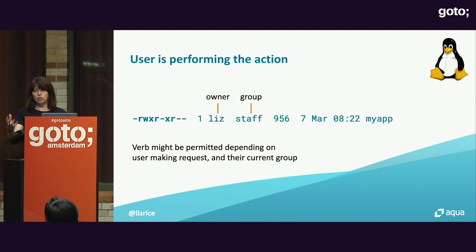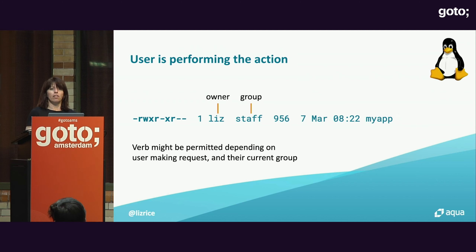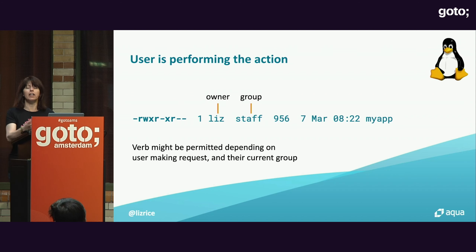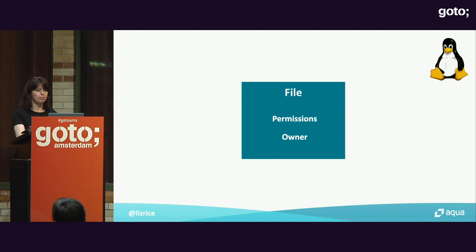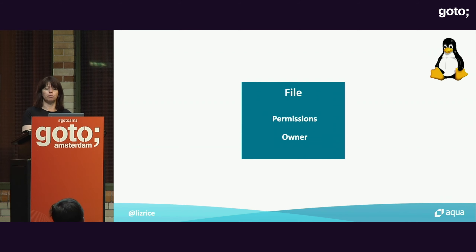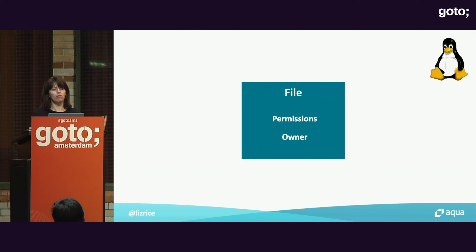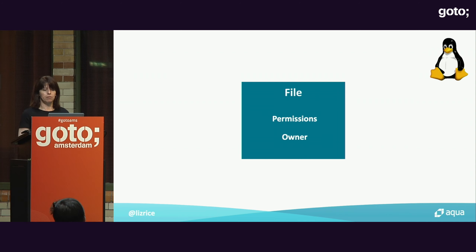To note here: there's a user who is doing something — reading, writing, or executing — and that action, the verb they're doing, may or may not be permitted depending on who the user is, what group they're in, and which file they're trying to act on. Everything we need to know about whether a user can perform an action on a file is encapsulated in attributes of the file itself — its permissions, owner information, and group information are all combined into one entity.